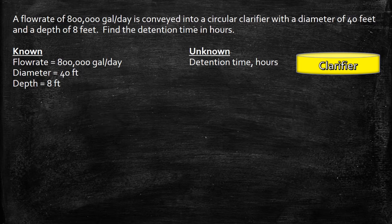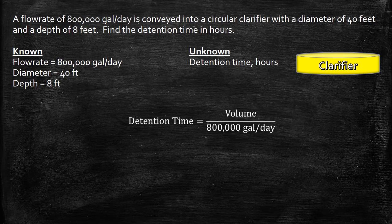So let's plug in what we were given into this formula. 800,000 gallons per day goes into the flow rate and for the volume, something that we need to calculate next.